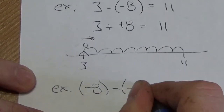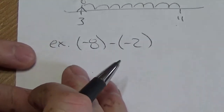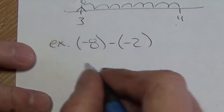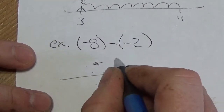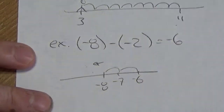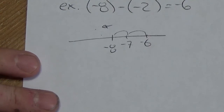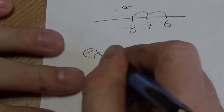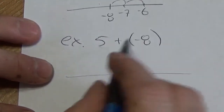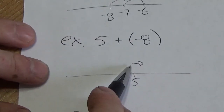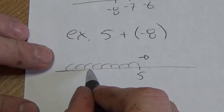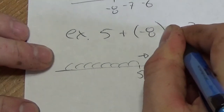Let's look at negative eight minus negative two. Negative eight tells you where you start; minus means I face left; negative two means I step backwards — so one, two — and that's going to be negative six. Let's try another one: five plus negative eight. Start on the number line at five, face forward, but go backwards eight: one, two, three, four, five, six, seven, eight. And where does that put us? Four, three, two, one, zero — negative three.